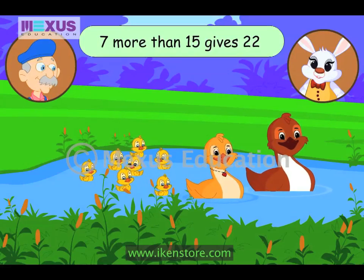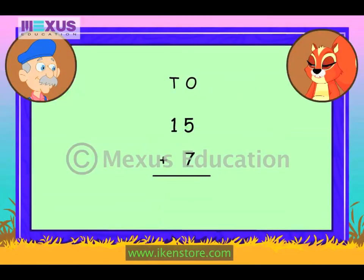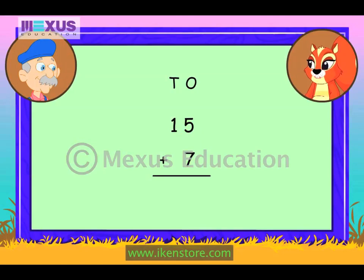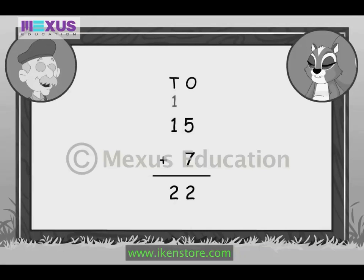Amber, can you try adding it stepwise? Sure, Uncle Bob. Five ones and seven ones give twelve ones. So, we write two under the ones column and carry over one. And next, we add one ten with the carried over one to get two tens. Very good, Amber.